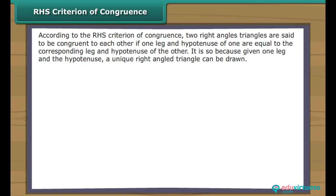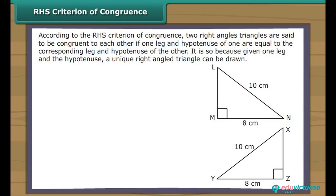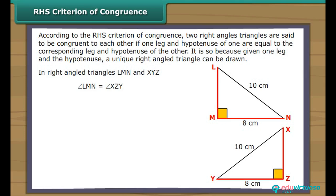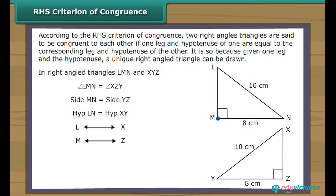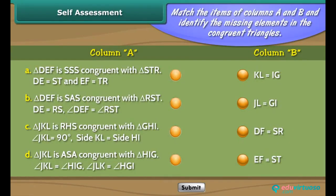According to the RHS criterion of congruence, two right-angled triangles are said to be congruent if one leg and the hypotenuse of one are equal to the corresponding leg and hypotenuse of the other. It is so because, given one leg and the hypotenuse, a unique right-angled triangle can be drawn. In right-angled triangles LMN and XYZ, vertex L corresponds to vertex X, vertex M to vertex Z, and vertex N to vertex Y. Therefore, triangle LMN is congruent to triangle XYZ.